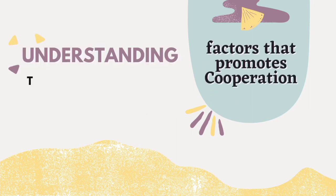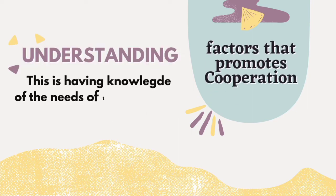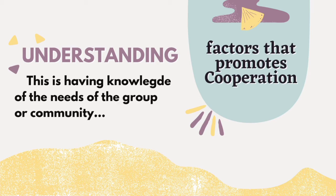Number two factor is understanding. Understanding is so important for cooperation to be effective and efficient, because understanding is having knowledge of the needs of the group or community or society, and understanding the reason there should be provision to meet that need.